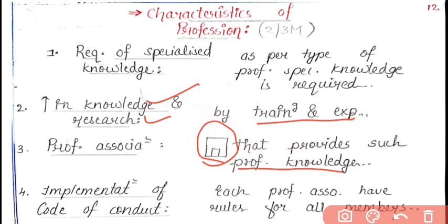The fourth characteristic is implementation of code of conduct. Code of conduct means rules and regulations. In whichever profession you are, there will be some rules and regulations. For example, doctors take a pledge that they will protect patients at any cost. Similarly, in CA, law, and every field there are rules and regulations. If you are a doctor you follow your code of conduct; if you are a CA you follow the rules and regulations of being a member of ICAI.